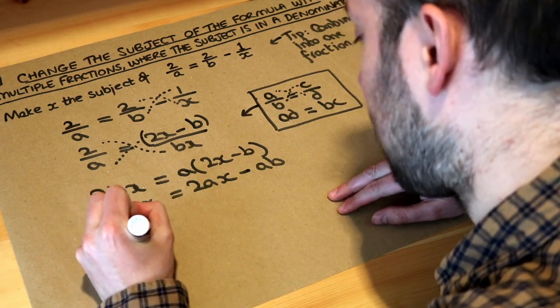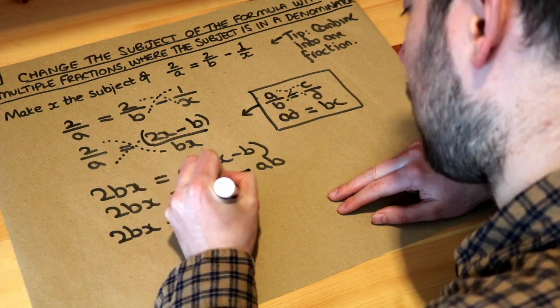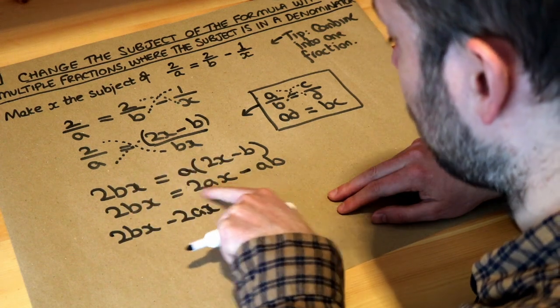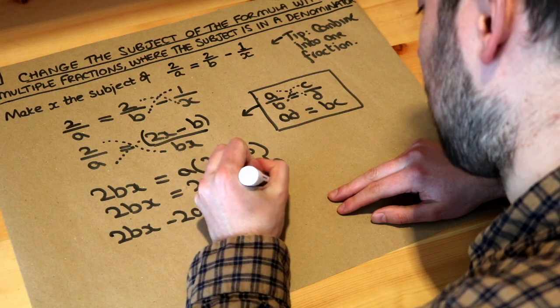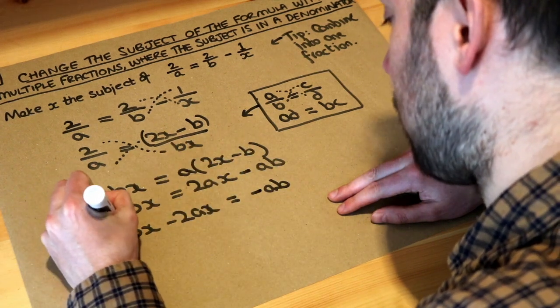So we do 2bx minus 2ax, and on the right hand side, well we've subtracted the 2ax, so we're just left with minus ab. So let me just write what we've done there. We've subtracted 2ax.